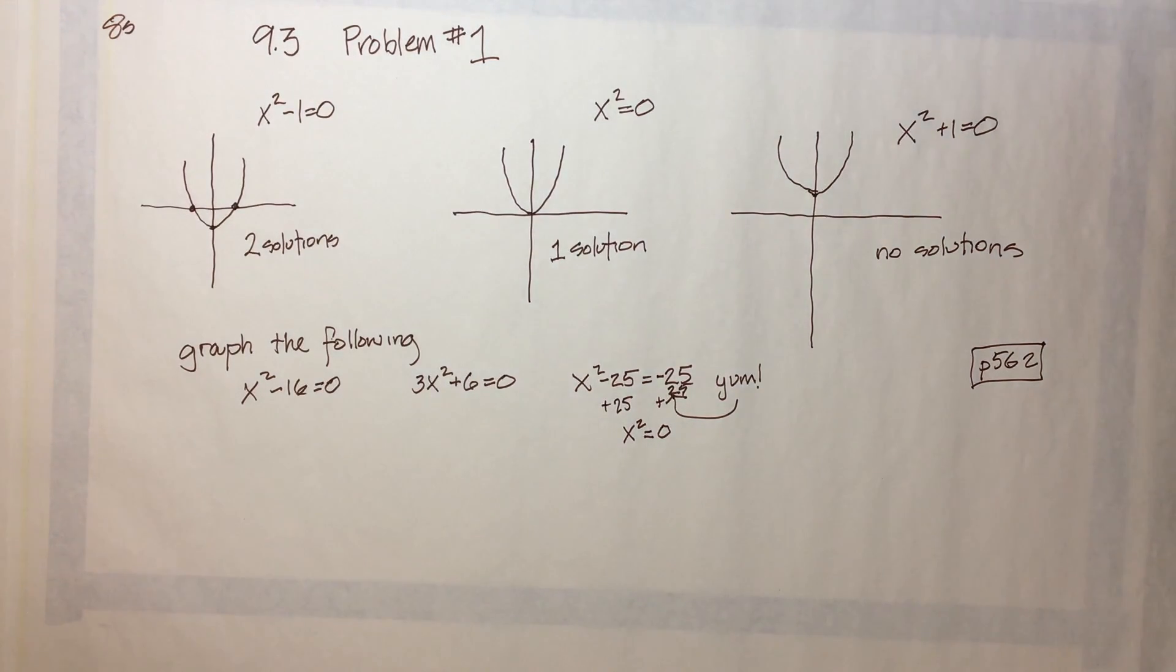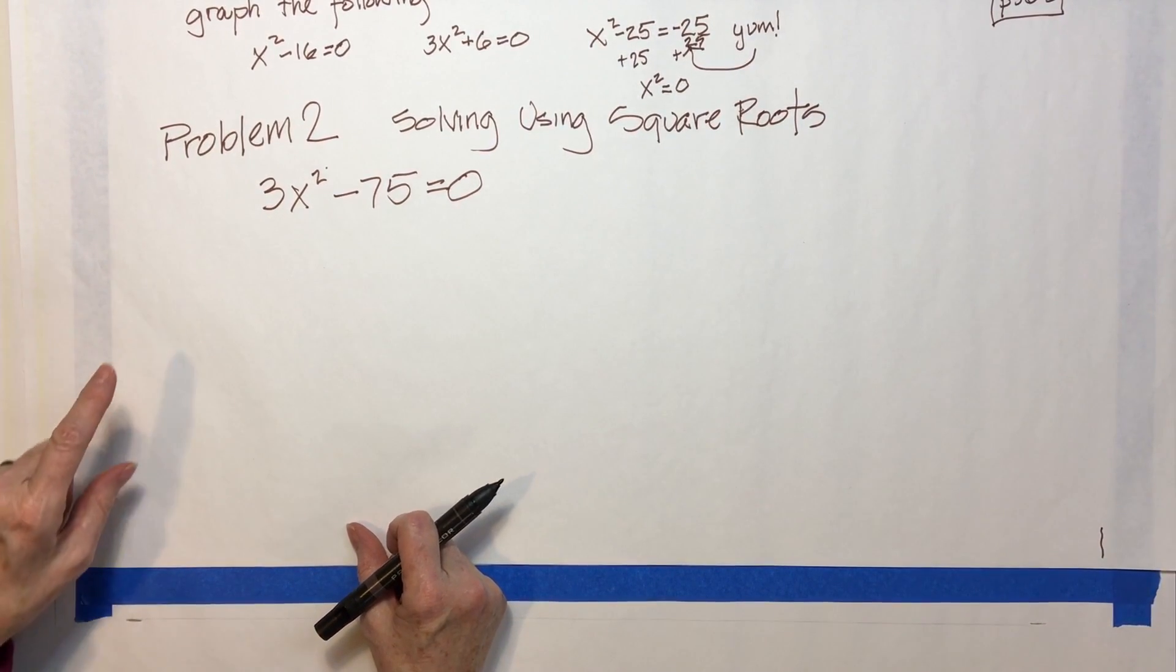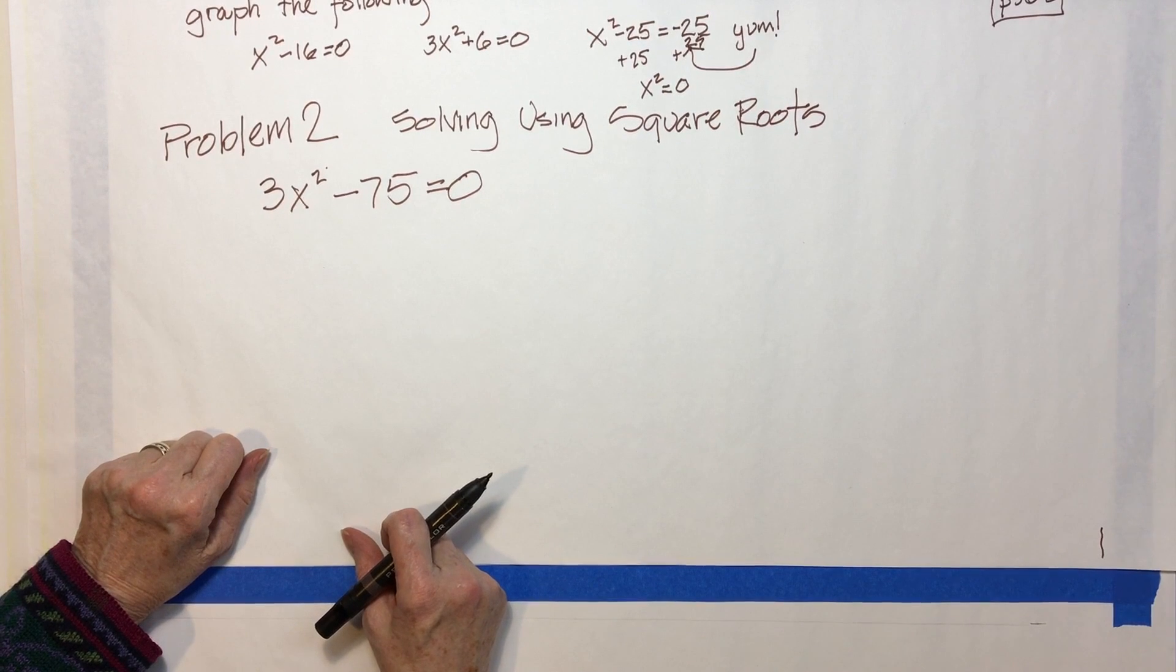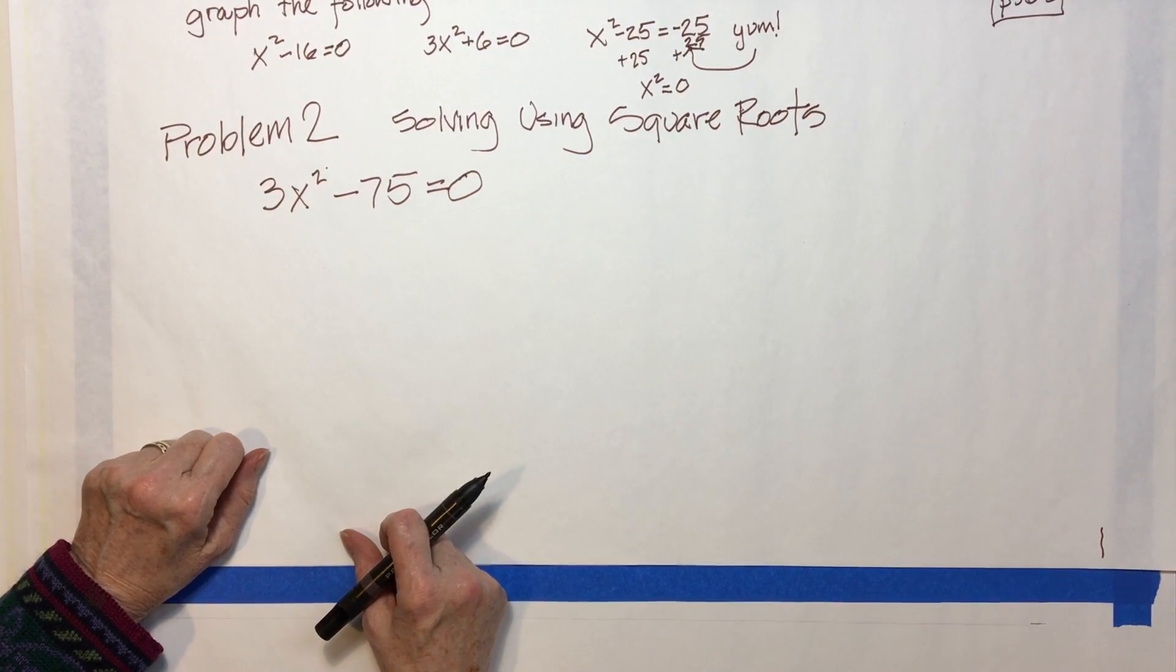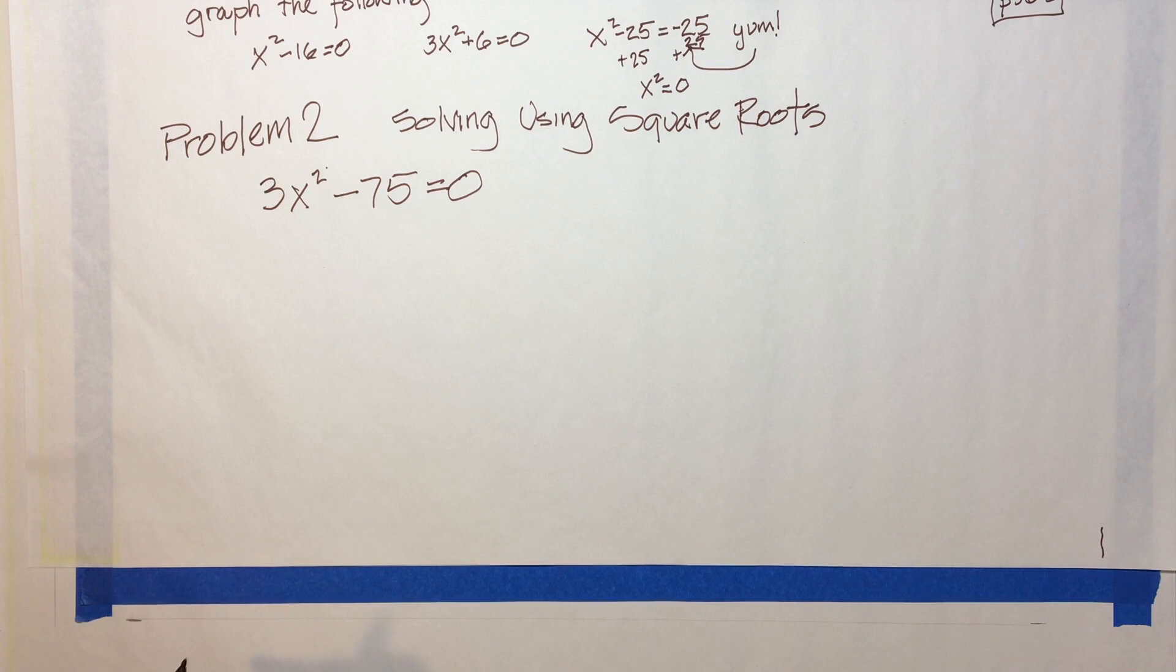Okay, so now we're working on problem number two on 9.3, and that's called solving equations using square roots. And we've got an example here of 3x squared minus 75 equals zero.